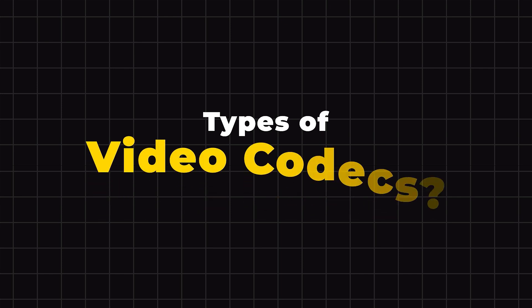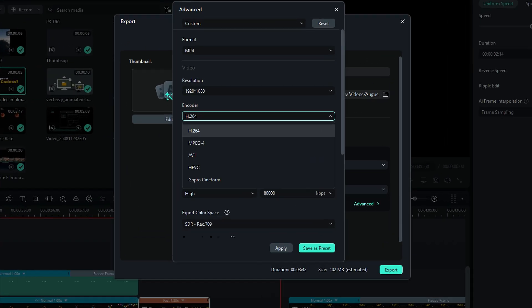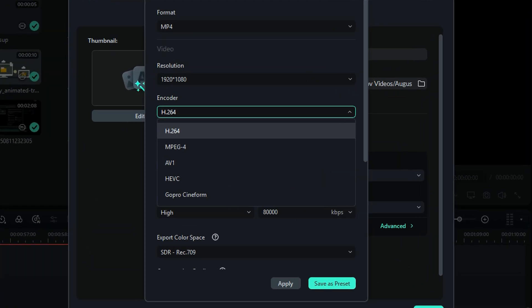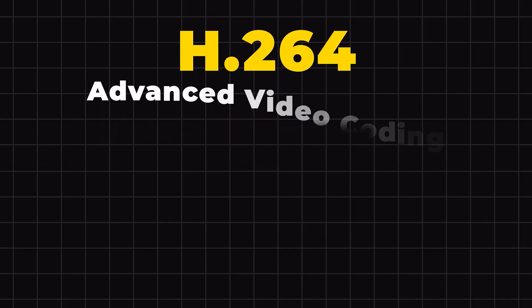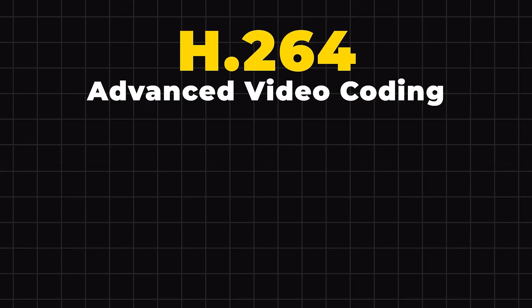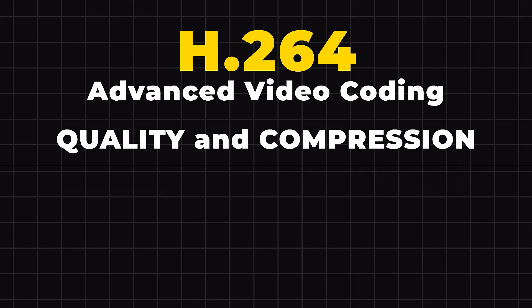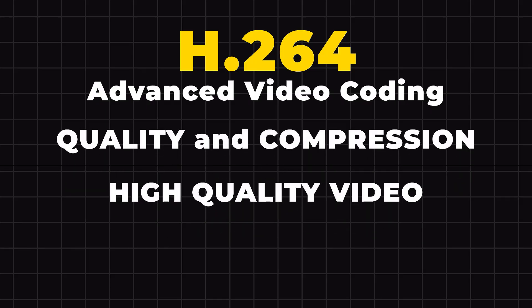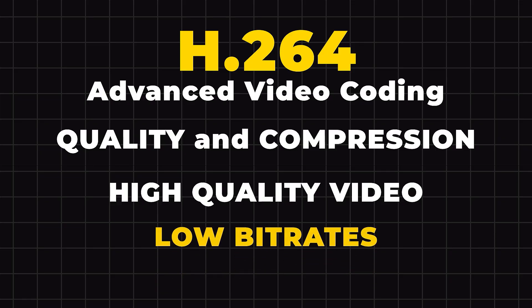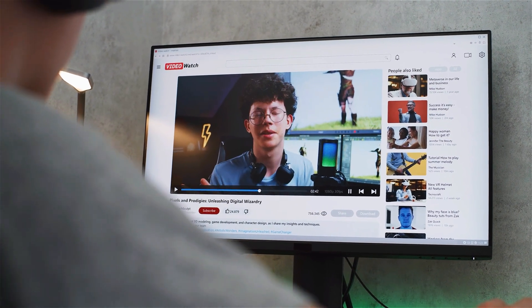Filmora offers five types of video encoders. The first codec is H.264, also referred to as advanced video coding. It is a widely used encoder known for its balance between quality and compression, recognized for its ability to encode high-quality video at relatively low bitrates, which makes it popular for streaming.